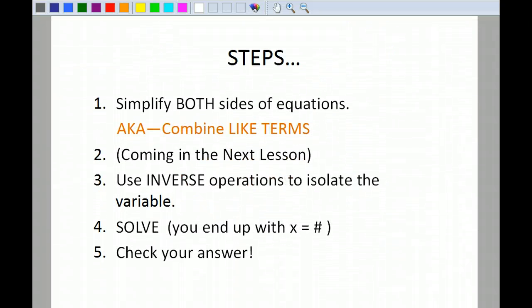So first, let's go through the steps. The first thing you're going to do is simplify both sides of the equation. That just means you're going to combine your like terms. Step 2 is going to come in the next lesson. The third thing you're going to do is use your inverse operations to isolate the variable. So if you need to move it to the other side of the equal sign and it's added, you're going to subtract.